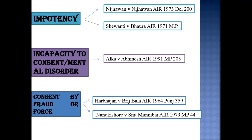Impotency is the incapability to consummate marriage; it can be mental as well as physical. In Najjavan vs Najjavan (1973), a wife felt depressed owing to her husband's failure to perform marital intercourse, and the court held that the husband's impotency was a cause of cruelty, as harmonious sexual activity is the foundation of marriage. In Shivanti vs Bhaura (1971), the husband alleged the wife was impotent, but it was found she was capable of marital intercourse. The court held that mere barrenness or incapacity to conceive does not amount to impotency — impotency is merely incapacity to perform intercourse. The burden of proof in impotency lies on the petitioner.